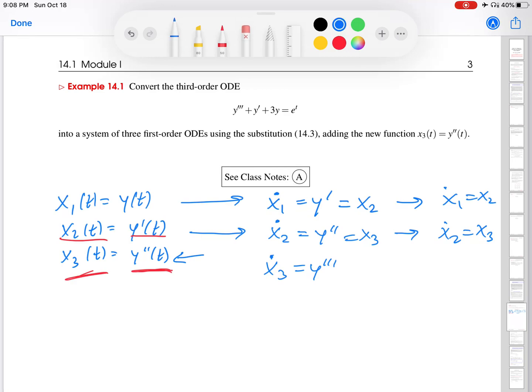Okay, I have no x4, so in order to substitute in anything for y prime, I have to go back up to the differential equation itself. And I'm going to solve here for y triple prime. So that equals e to the t minus y prime minus 3y. So that's what I put down here, e to the t minus y prime minus 3y.